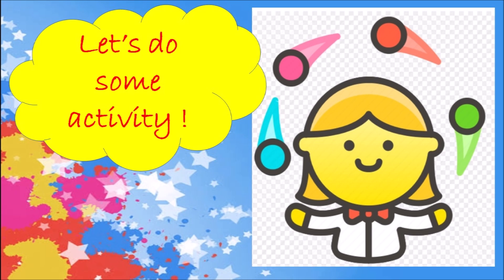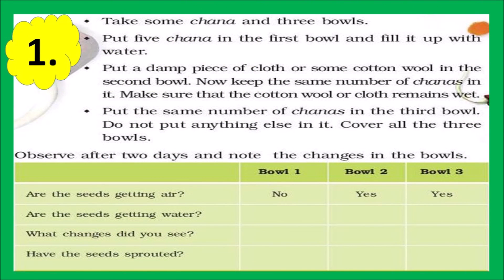Let's do some activity to see whether these conditions really affect the sprouting of seeds. For this activity, you need some chana seeds, three bowls and a piece of cloth. Put five chana in the first bowl and fill it with water. Put a damp piece of cloth or some cotton wool in the second bowl and keep the same number of chanas in it — make sure that the cotton wool or cloth remains wet. Put the same number of chanas in the third bowl but do not put anything else in it. Cover all three bowls, leave them for two days, observe any changes, and record your observations in the table.